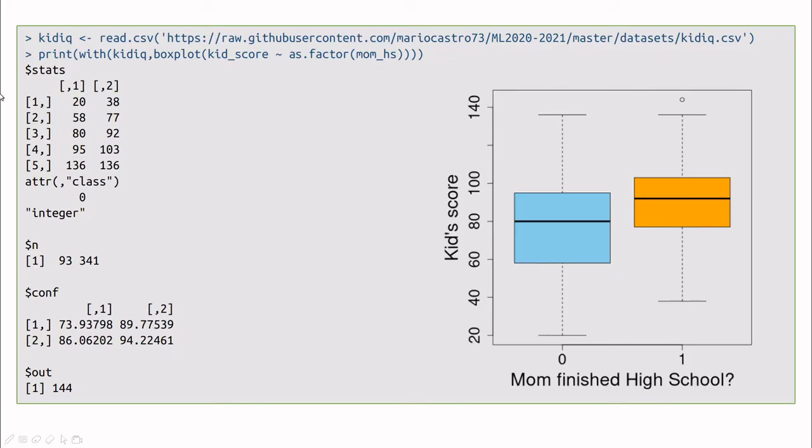So let's do some stuff using R. Let's take this dataset. You can download this from my GitHub repository. And let's plot simply with this function boxplot. I'm going to transform this mom has high school to a factor. And then let's see what happens. And here we go. So this is the median. As I was saying, the median for the kids whose mother didn't finish high school is 80, and for the ones whose moms finished high school is 92.